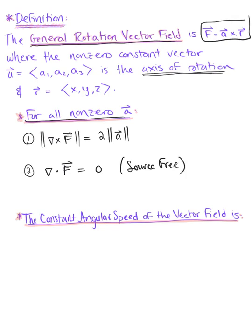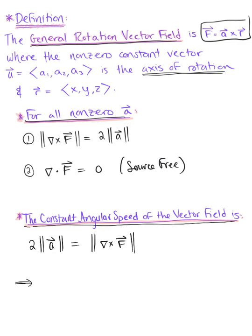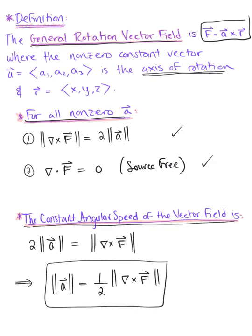We can also define the constant angular speed of the vector field. Using the first property, since 2|a| = |∇ × f|, dividing both sides by 2 gives us that the constant angular speed is |a| = ½|∇ × f|. We can easily verify all three of these properties using just a little computation, and I encourage you to challenge yourself to verify these two properties now.